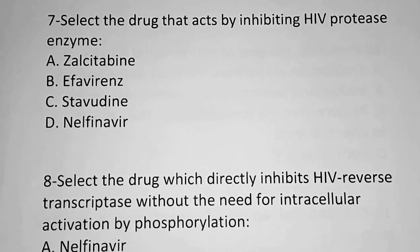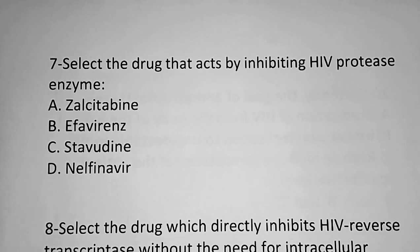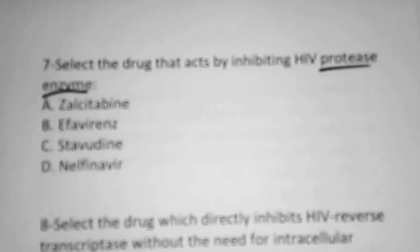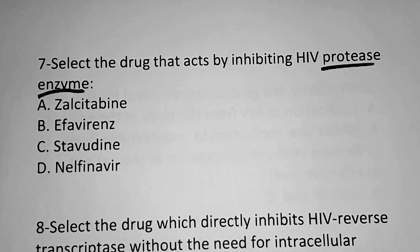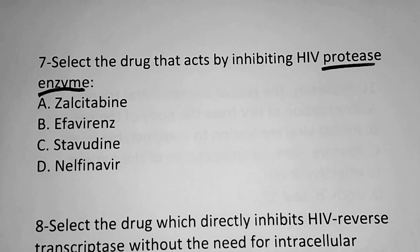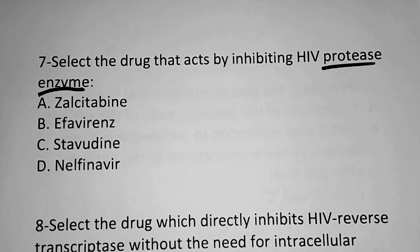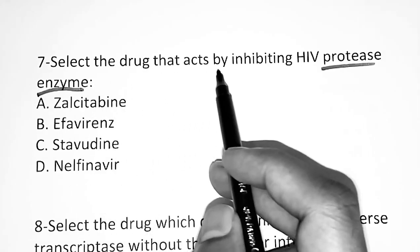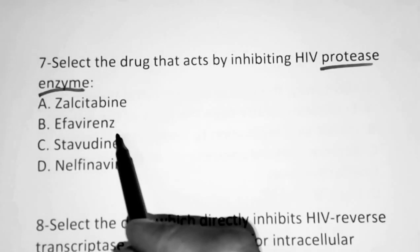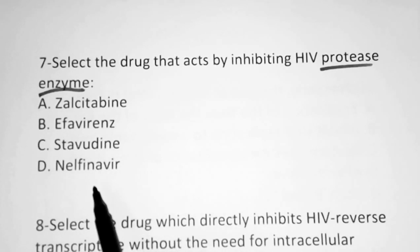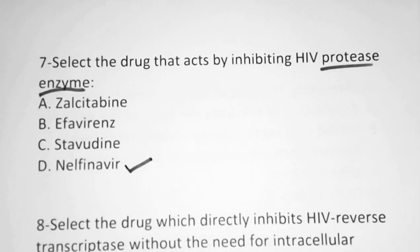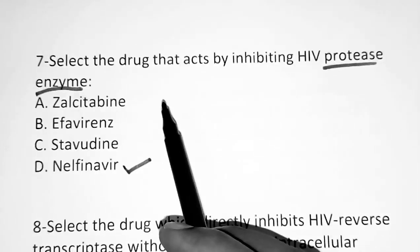Question 7: Select the drug that acts by inhibiting HIV protease enzyme. These questions come directly from the classification of antiviral drugs, which are classified based on their mechanism of action. Option A: zalcitabine, Option B: efavirenz, Option C: stavudine, Option D: nelfinavir. The correct answer is Option D — nelfinavir inhibits the HIV protease enzyme.